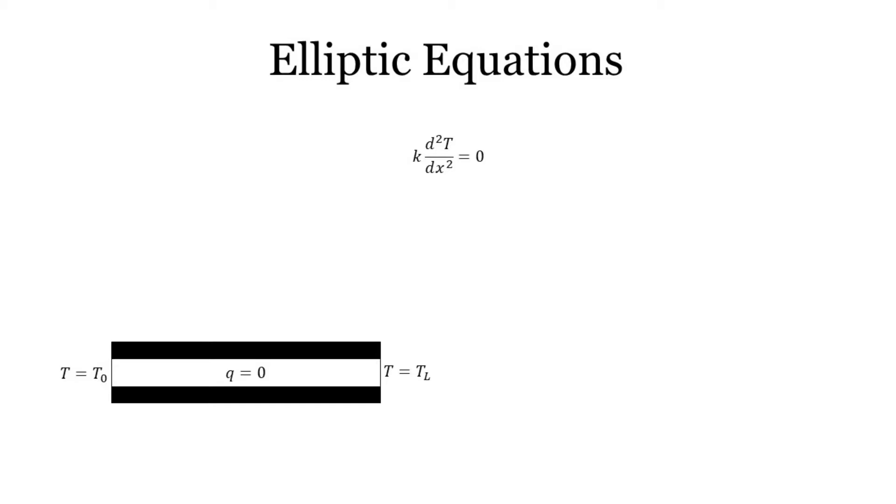This situation is governed by the following equation. In this case, the solution is a simple linear distribution with T at x equals 0 equal to T0 and T at x equals L equal to TL. The slope of the line is TL minus T0 divided by L.